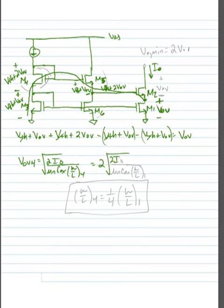So this would be 2 times the square root of 2 times ID divided by mu NCOX times W over L1, and if we solve for the ratio of W over L1 to W over L4, we would see that we would need W over L4 to be one-fourth the size of W over L1, or any of the other transistors. We're assuming that all the transistors except for M4 have the same VOV. M4 is the only one that has a larger VOV, which means that we need to make the transistor smaller.